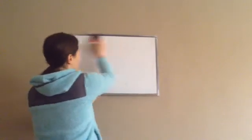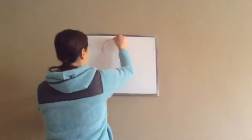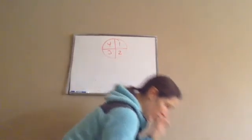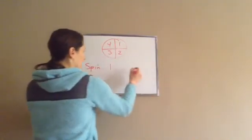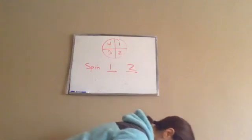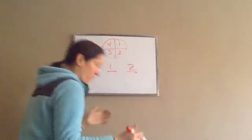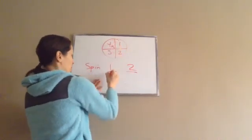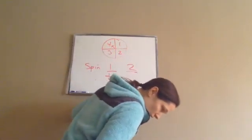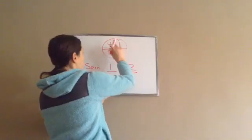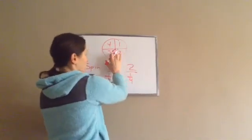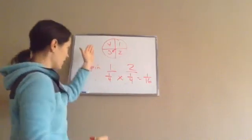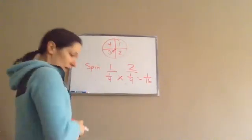Last one — the spinner. It has four sections: one, two, three, four. A spinner is spun twice. What is the probability that it stops on four first and then three? I have a one in four chance of stopping on four, and a one in four chance of stopping on three. Multiplying gives a one in sixteen chance. That is Lesson 70.